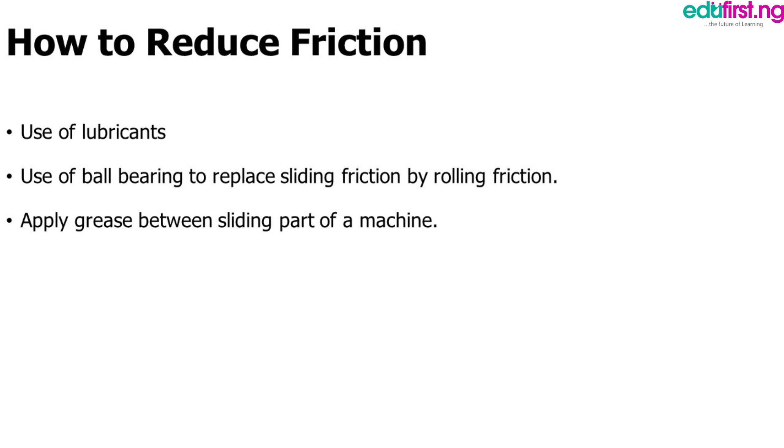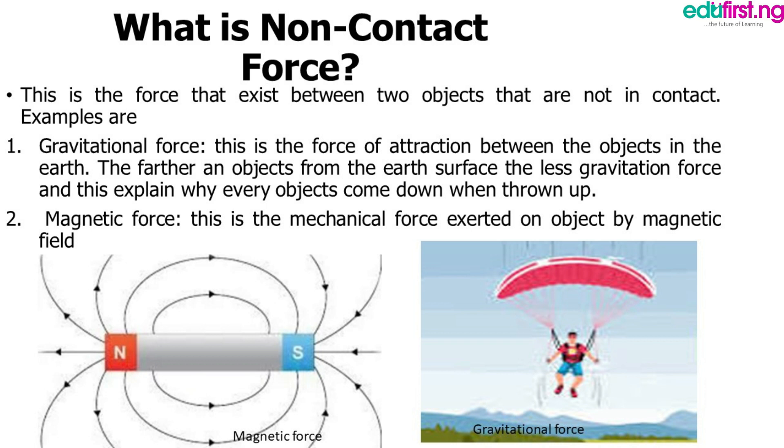What is non-contact force? This is the force that exists between two objects that are not in contact. Examples are one, gravitational force. This is the force of attraction between the object and the earth. The further an object from the earth surface, the less gravitational force. And this explains why every object comes down when thrown off. Two, we have magnetic force. This is the mechanical force exerted on an object by a magnetic field. These are two examples of non-contact force.